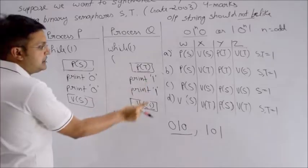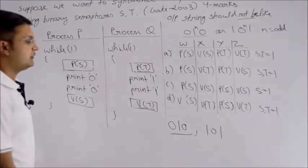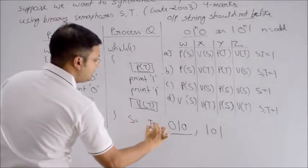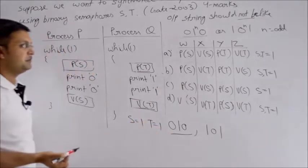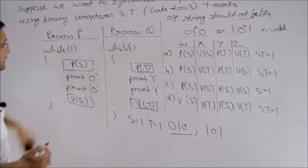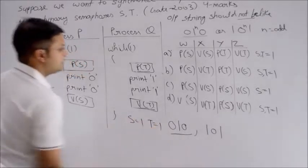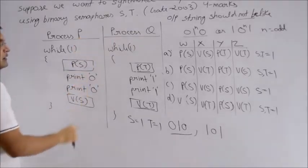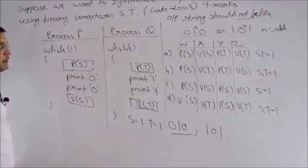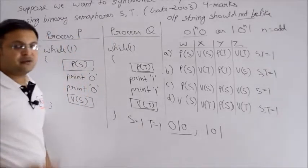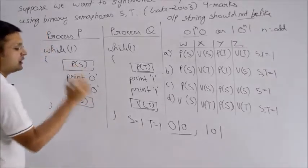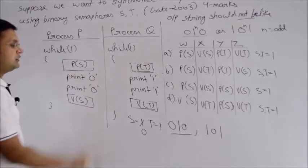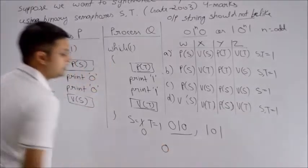Fill in the blanks - I've filled in option A's values. For W you have P of S, for X you have V of S, for Y you have P of T, and for Z you have V of T. Now let's solve. In option A, S and T both are initialized to 1. Now I'll try to run this. I need 0, 0 first. Who can give me that? P, because P prints 0. Can I do P of S? Yes, this time I can because S's initial value is 1, and we can decrement it.